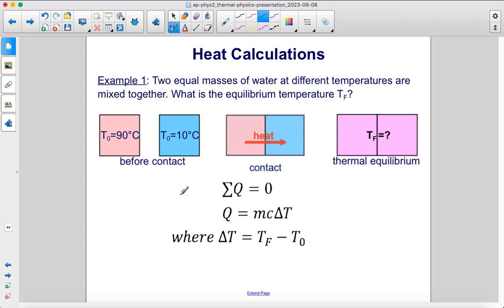Then two equal masses of water at different temperatures are mixed together. What is the equilibrium temperature Tf, where F stands for final? Well initially, this water is 90 degrees Celsius and that water is 10 degrees Celsius. They're going to mix together.